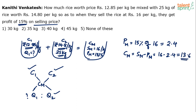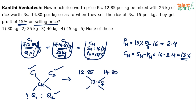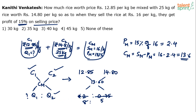The cost price of the mixture is 13.6 rupees per kg. Now substituting the values into the alligation: c1 = 12.85, c2 = 14.80, cm = 13.60. Taking cross differences: 14.8 minus 13.6 equals 1.2, and 13.6 minus 12.85 equals 0.75. Simplifying, this gives a ratio of 8 is to 5.